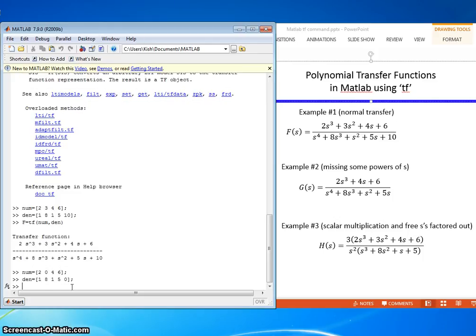Now we can build our function g using the tf command, num comma den.